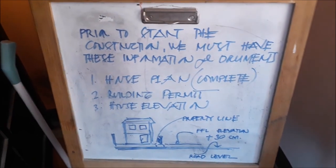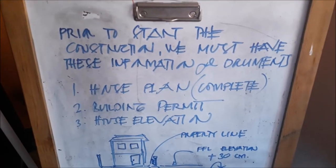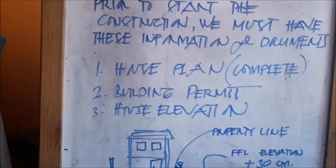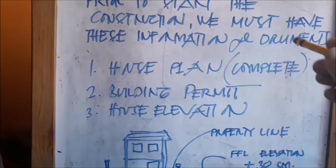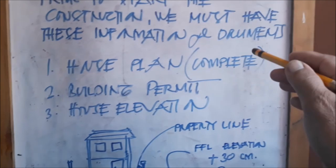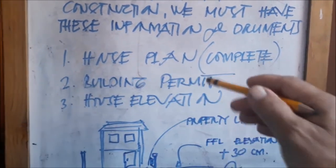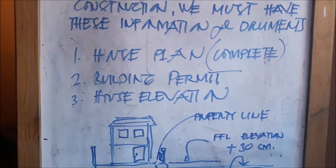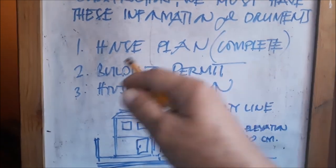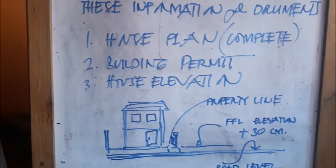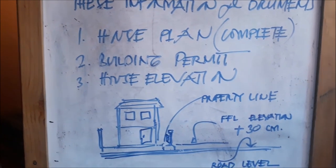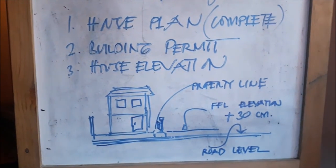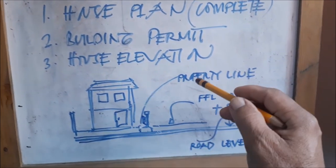Mga kaibigan, bago po tayo magsimula ng construction, first and foremost, ito po ang dapat nating meron bago tayo mag-start. Prior to start the construction, we must have this information and documents. Dapat meron po tayong house plan — kompleto, electrical, mechanical, civil, architectural — approved at naka-stamp na. Building permit, baka tayo masakote. Meron po tayo niyan, and then house elevation — identify po natin kung ano ang house elevation o yung finished floor line sa loob ng ating kabahayan.